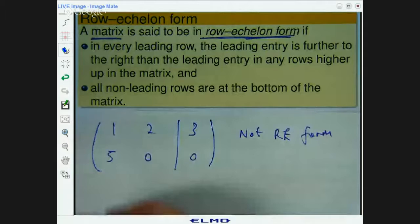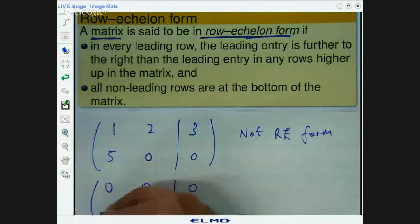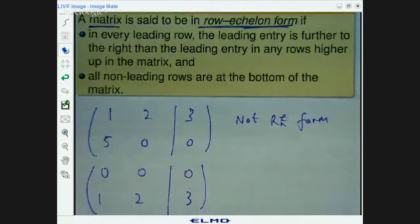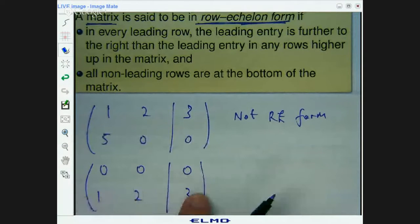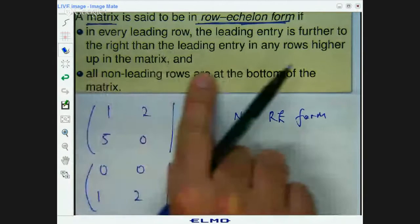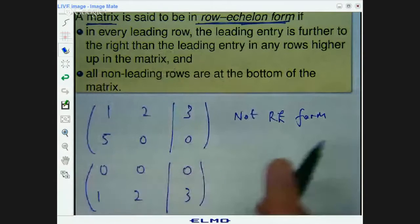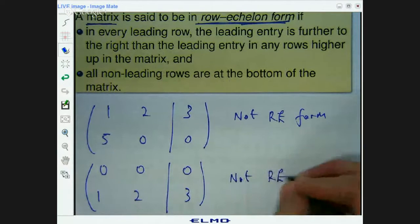How about one more? How about this one? Well, that's a leading row. That's not a leading row, but it's at the top. So it knocks out the second part. All non-leading rows are at the bottom of the matrix. Well, that's definitely not row echelon form.